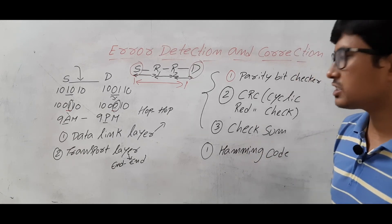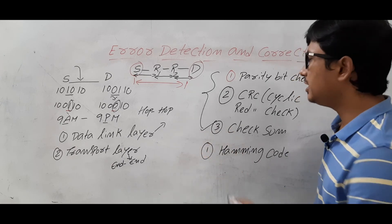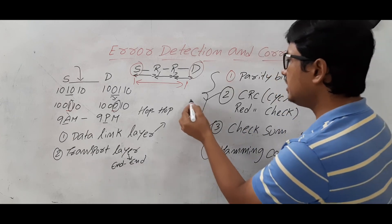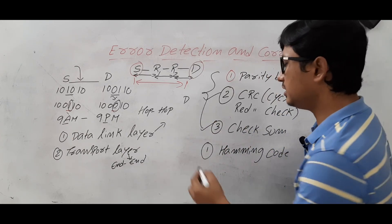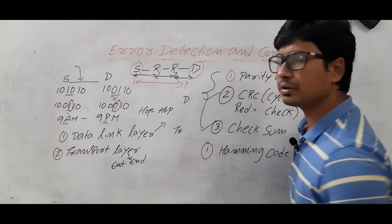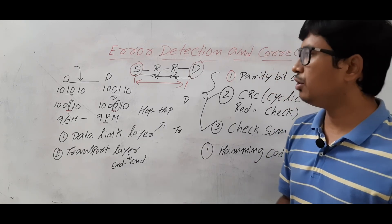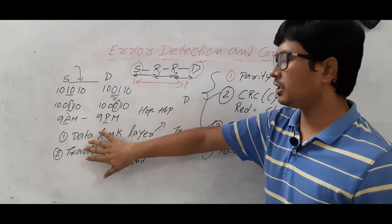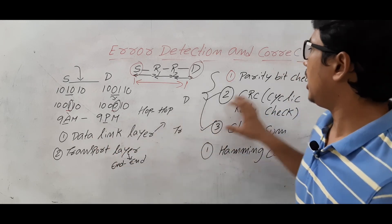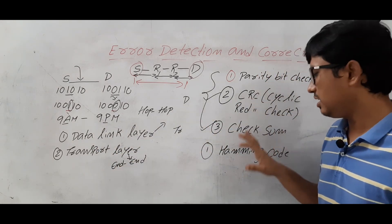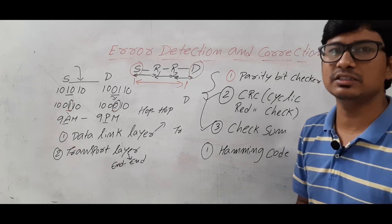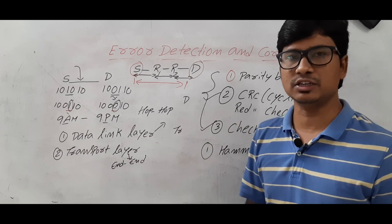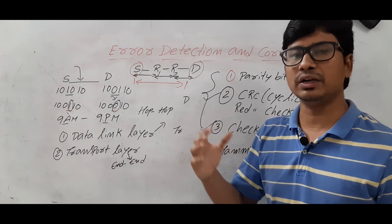Regarding which layer uses which strategy: the data link layer uses CRC (Cyclic Redundancy Check), and the transport layer protocols use checksum. In the coming videos we will discuss each strategy in detail with examples. So to summarize: we covered what is an error, single bit errors, multi-bit errors, which OSI layers handle error control, and what the error detection and error correction strategies are.